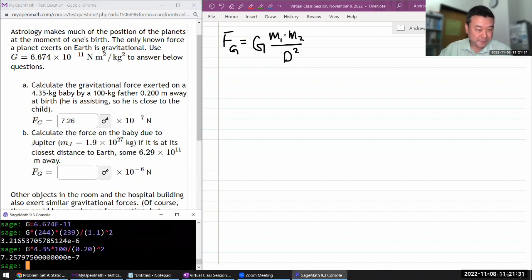So now, force of Jupiter on the baby. We got everything. G times mass of the baby, 4.35 kilogram, times the mass of Jupiter. It's pretty large, astronomical. 1.9 times 10 to the power of 27 kilogram, basic SI unit. And it's at this large astronomical distance away, divided by 6.29 times 10 to the power of 11 meter, basic SI unit away. In astronomical context, watch out for when the distances might be kilometers. You need to convert it to meters if you're doing all the calculation in basic SI units.